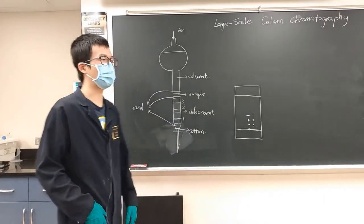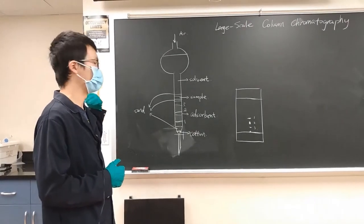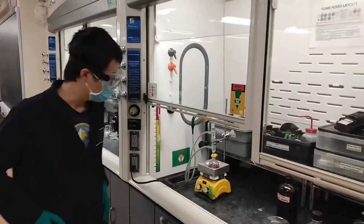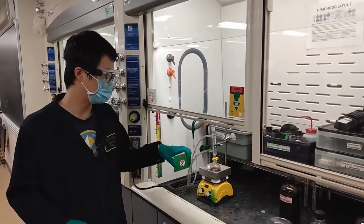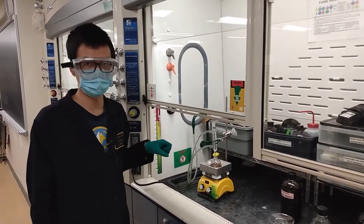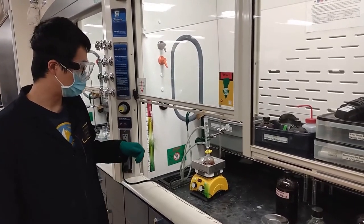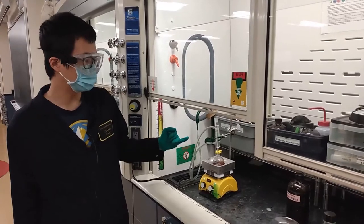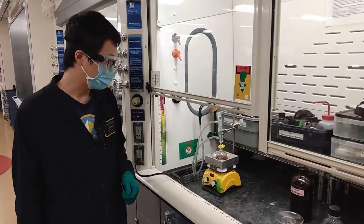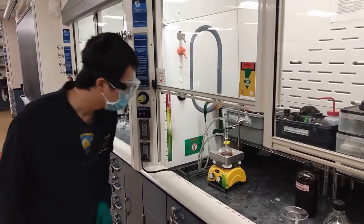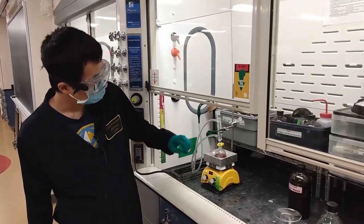The first step of this experiment is to reflux the paprika in DCM. The setup looks like this. Pay attention that the water flow will go in from the bottom and go out from the top. When you're heating up, try not to let the refluxing line go up too high.